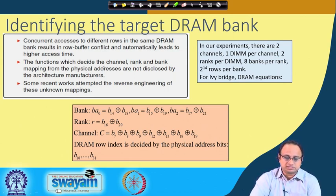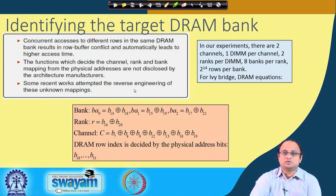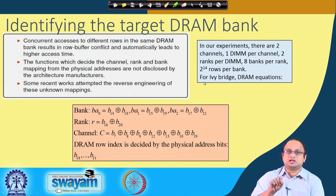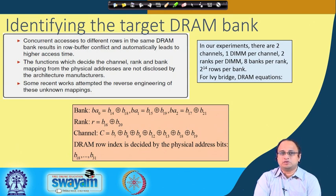The functions which decide channel, rank, and bank mapping from the physical address are not typically disclosed, but we use equations published in prior research works. Also worth noting: in a bank there are approximately 2^14 rows. It is therefore difficult to get the exact row number in the bank. We can get to the bank, but for accessing adjacent rows we have to do repeated attempts and assume that a few of them will be successful.